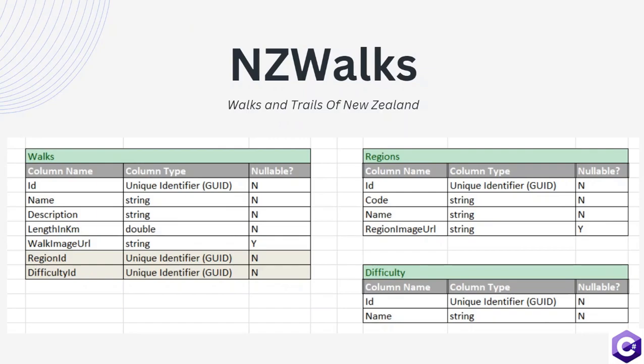The most important thing in our domain will be the walk. Walk will have a few properties and, when it comes to a database, it will have a few columns. The walk domain model will have an ID, which will be a unique identifier. Because we are using C#, we will use a type of GUID. This will not be nullable, meaning it will always have a value.